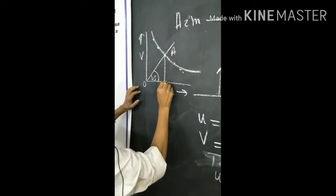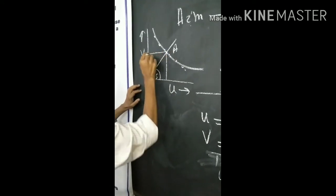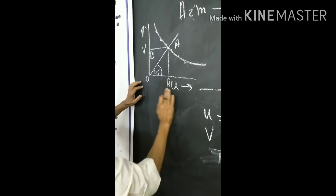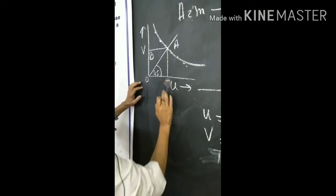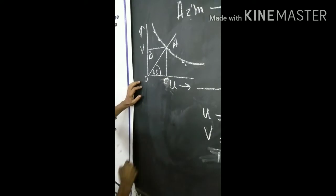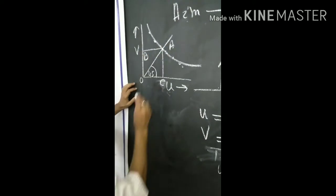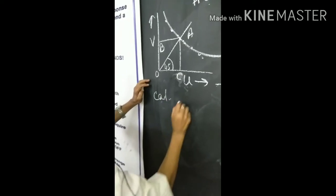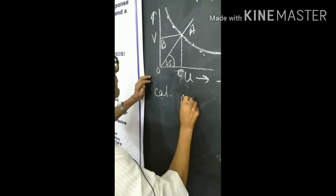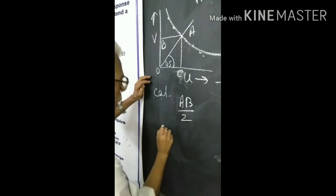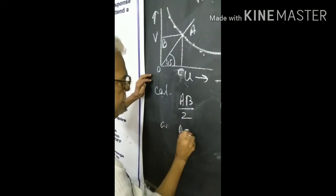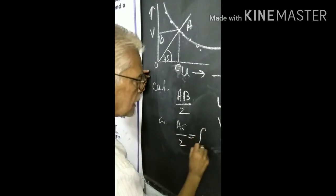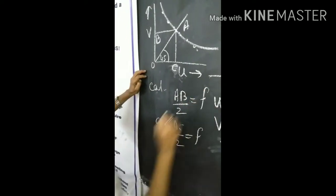Drop a perpendicular from here to the u-axis, and drop a perpendicular from here to the v-axis. Label the points B and C. So for calculation, calculate A-B divided by 2, or A-C divided by 2. That will be equal to the focal length.